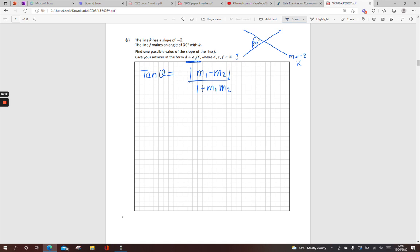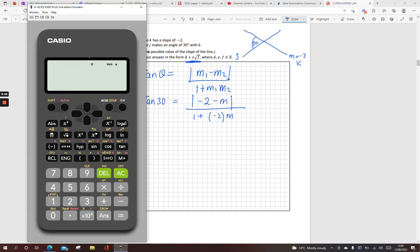So, tan theta is equal to, I used modulus signs with absolute value here, M1 minus M2 over 1 plus M1 M2. I'm going to fill in. My angle there is 30 degrees. So, tan of 30 is equal to M1. It doesn't matter what I call M1 or M2. I'm just calling M1 the first slope, which is minus 2, minus, and I'll just call it M from now on, so I don't think it's a squared later on, over 1 plus M1, which is minus 2 times M. Tidy that up. Make sure our calculator is in degrees, which is shown by that D.